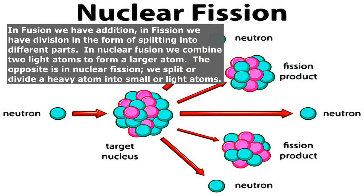In fusion we have addition; in fission we have division, in the form of splitting into different parts. In nuclear fusion we combine two light atoms to form a larger atom. The opposite is nuclear fission, where we split or divide a heavy atom into small or light atoms.